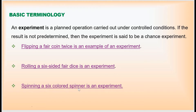The third example is spinning a six-color spinner. The spinner has six different colors. When you spin it, we don't know where it will land. That's also an experiment.